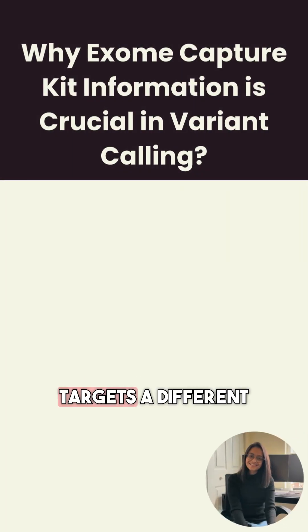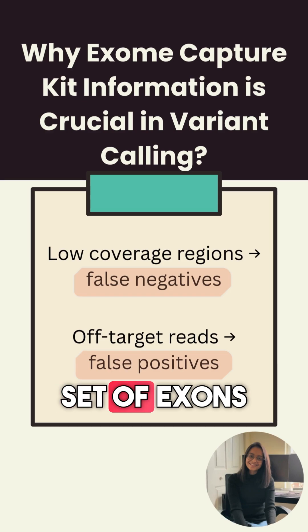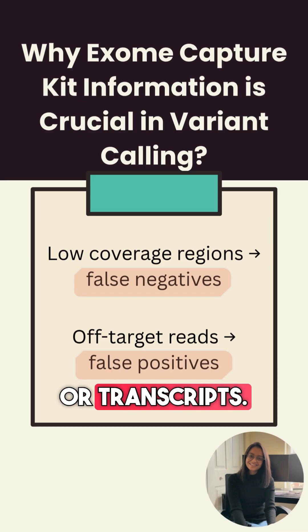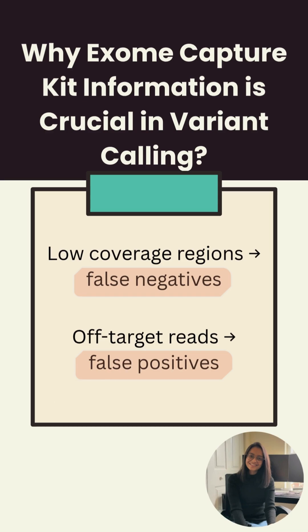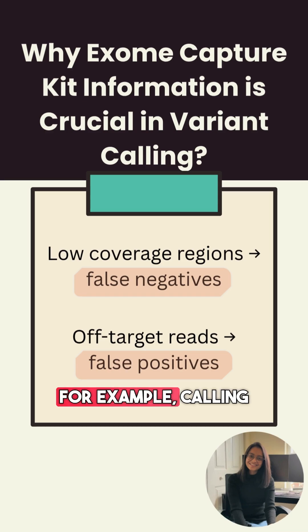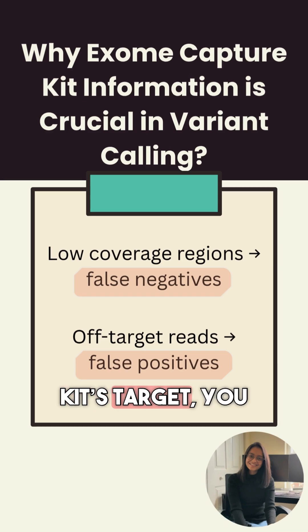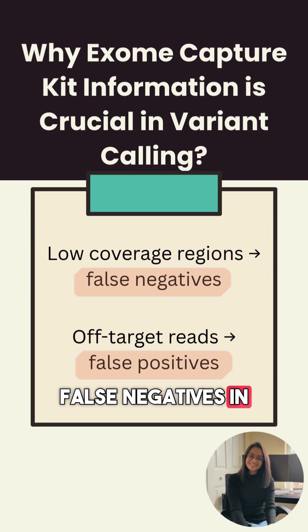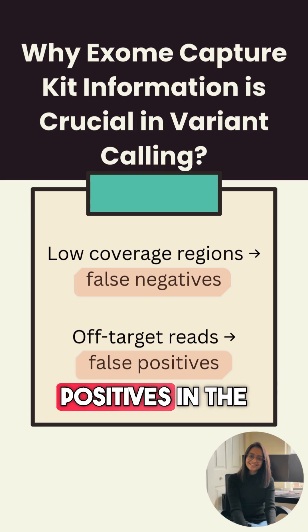Every exome kit targets a different set of exons or transcripts. If you use the wrong BED file — for example, calling variants outside your kit's target — you will be producing false negatives in the low-coverage regions and false positives in the off-target regions.